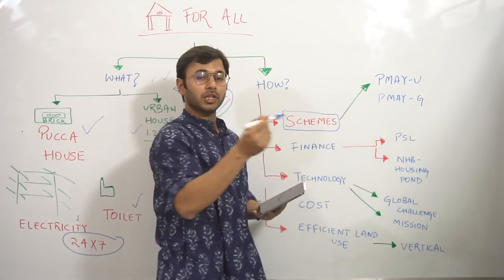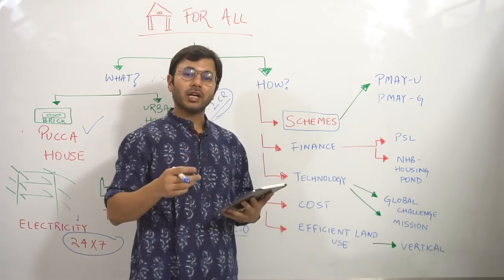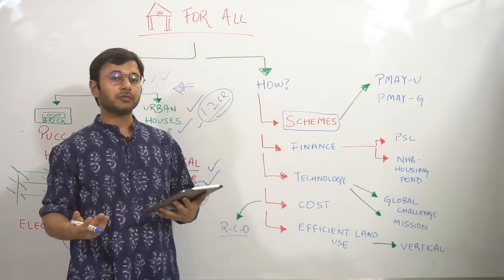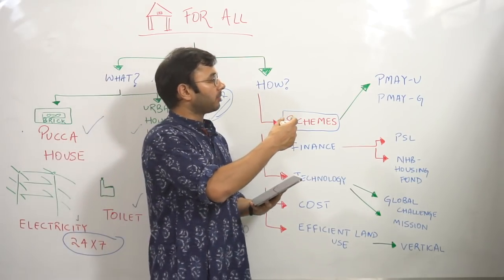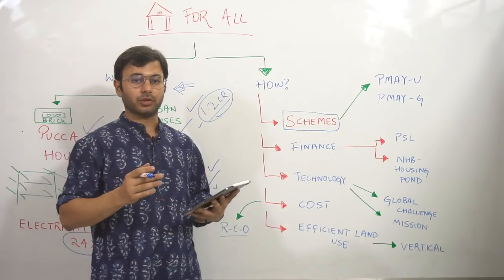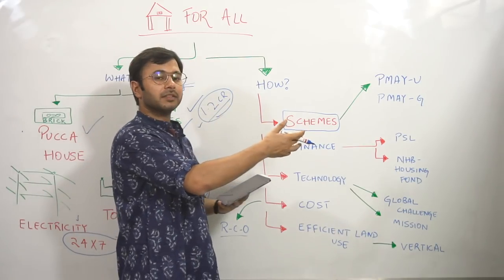What are the major schemes which are involved in housing for all? Number one, there is Pradhan Mantri Awas Yojana Urban. And number two, there is Pradhan Mantri Awas Yojana Gramin. Now, there are certain specific targets for both of them and objectives for both of them, which are more clearly available in the government scheme section that I'm going to discuss in the future.